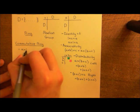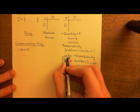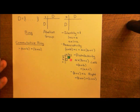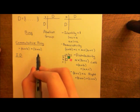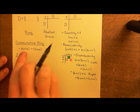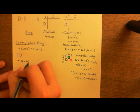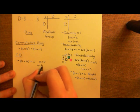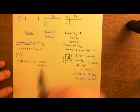For a commutative ring, A times B equals B times A. So the composition table is symmetric down the diagonal. Finally, to take it up to an integral domain — one step up from a commutative ring. An integral domain obeys all the previous properties up through commutativity, plus one more: if you have two elements A and B and you multiply them together and get zero, then either A equals zero or B equals zero.